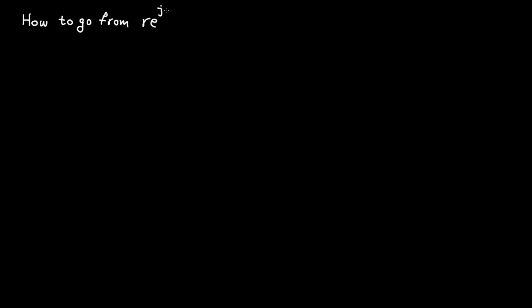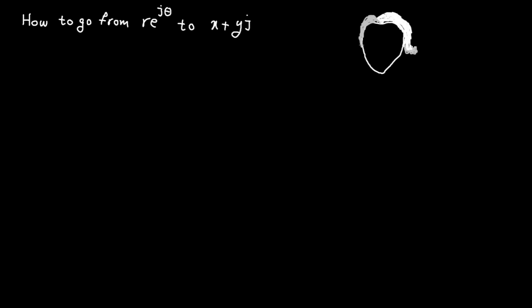Okay, now let's see how to go from polar to Cartesian. To do so, all you need to do is to use Euler's formula. Euler was one of the most famous mathematicians of the 18th century and probably one of the greatest in history. He was not only a mathematician but a physicist, astronomer, logician and engineer who made very important discoveries.